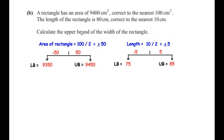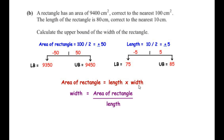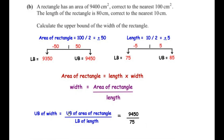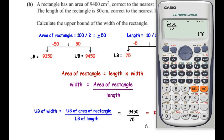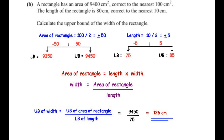Using width = area / length, the upper bound of width requires the upper bound of area over the lower bound of length: 9450 / 75 = 126 cm. So the upper bound of the width of the rectangle is 126 centimeters.